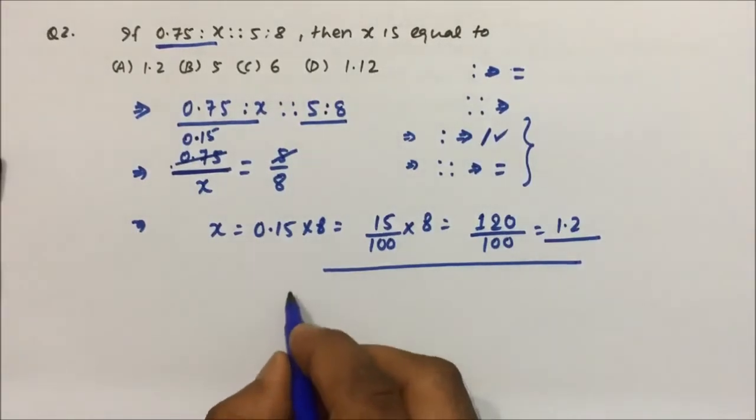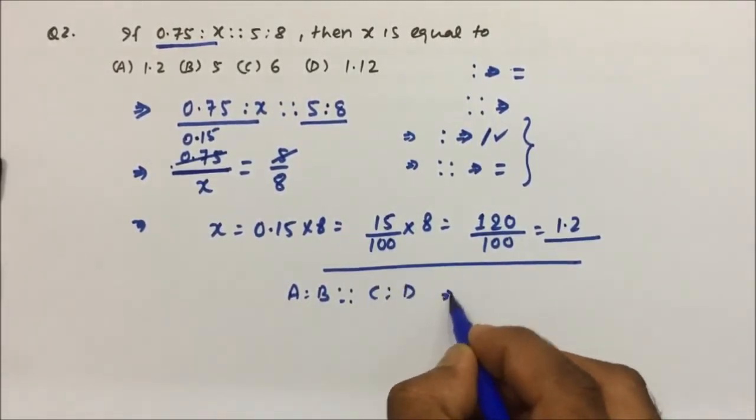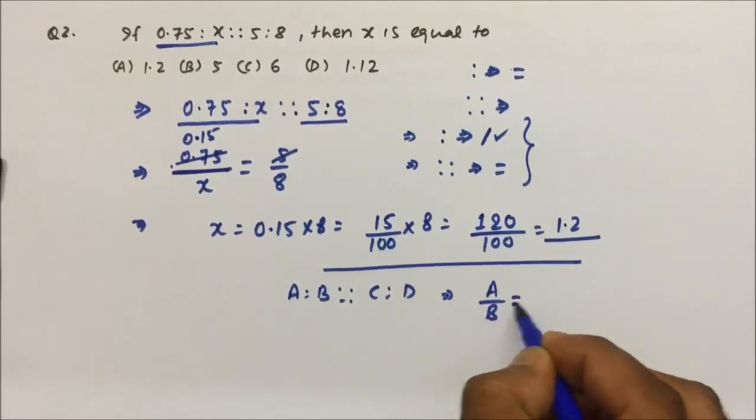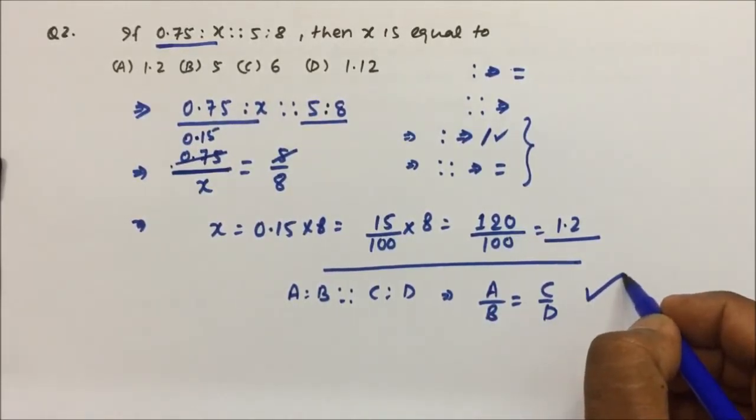So in any question, if it is given A is to B and then C is to D, we can directly convert it to A by B equals C by D, and then further calculation can be done.